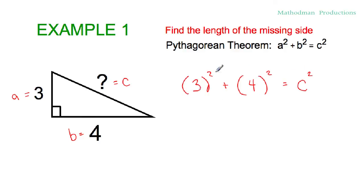Second step is to simplify. Three squared, that is just nine. Four squared, that's sixteen, equals c squared. And simplify even further. Nine plus sixteen, that's just twenty-five, equals c squared.